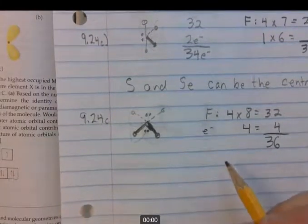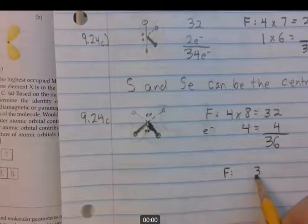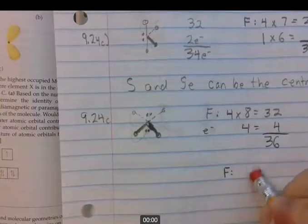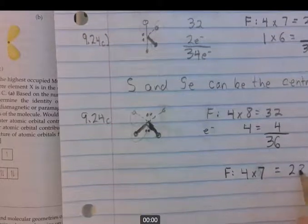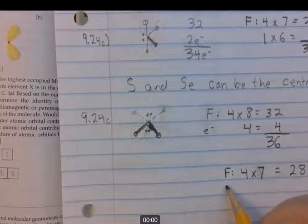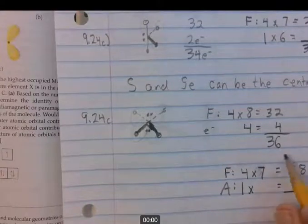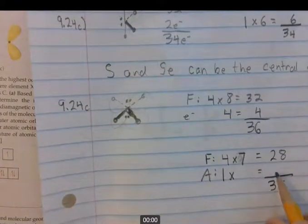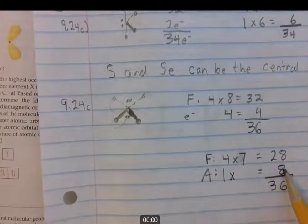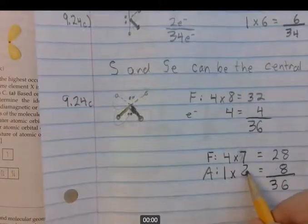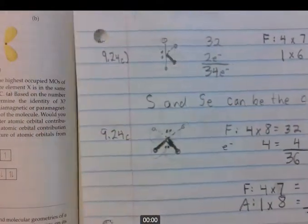So fluorine, there's 4 fluorines, each one has 7 electrons, so that equals 28. And then we have the mystery central atom A, one of those times some number is going to equal some number, and we have to total up to 36 total electrons. So this mystery number has to be 8. So it has to have 8 valence electrons because there's only one of them, and that has to be a noble gas. So the answer is xenon, Xe.